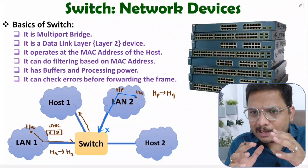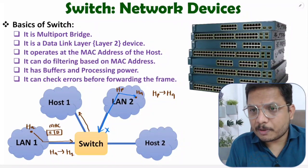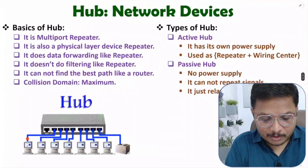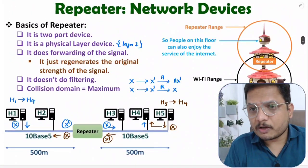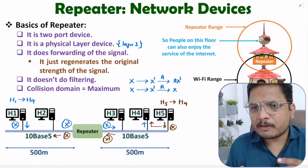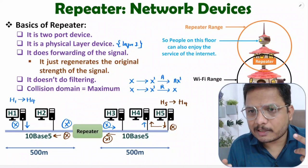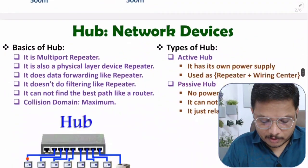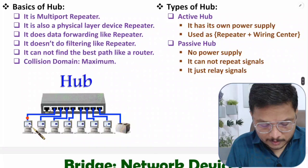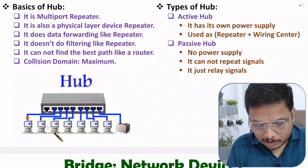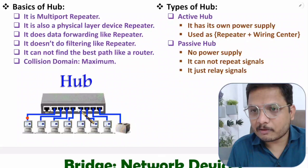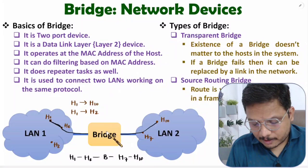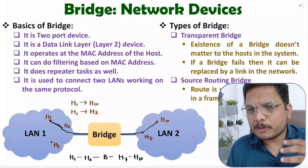The collision domain is very less with switch compared to previous devices — bridge, hub, and repeater. With repeater all hosts share signals; with hub the signal goes through to all hosts; and with bridge all hosts can transfer data via the bridge, so the collision domain was higher.